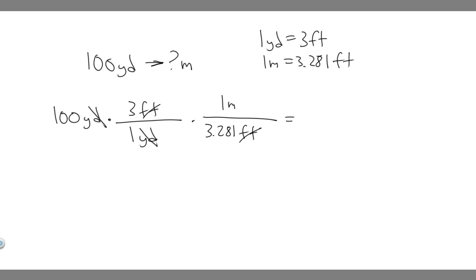So you want to go ahead and do this: 100 times 3 divided by 3.281. When you do that, you're going to get 91.4355 and so on.